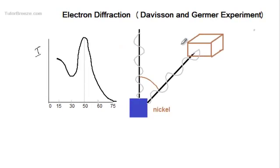Let's say these are the incident waves and these are the scattered waves. I am assuming an accelerating voltage of 54 volts, which means the electrons have been accelerated through a potential difference of 54 volts. Now, for these electrons, the maxima was observed at 50 degrees.